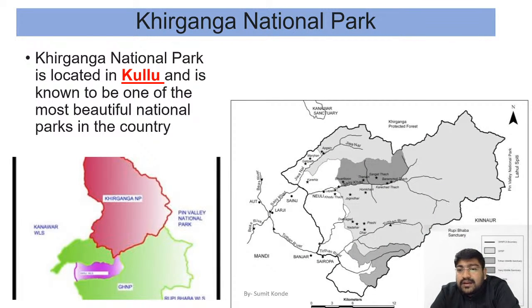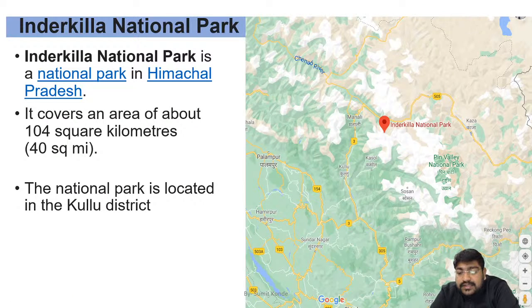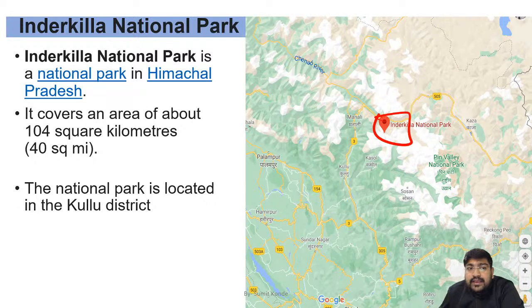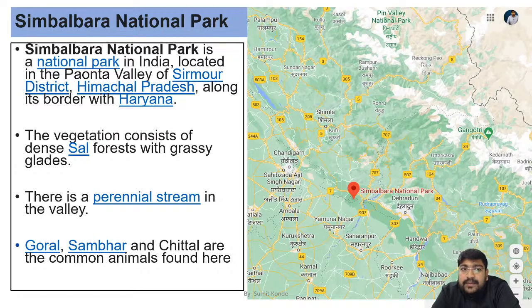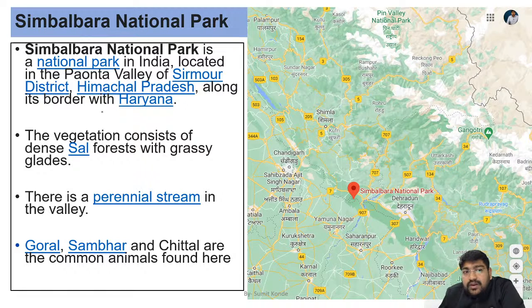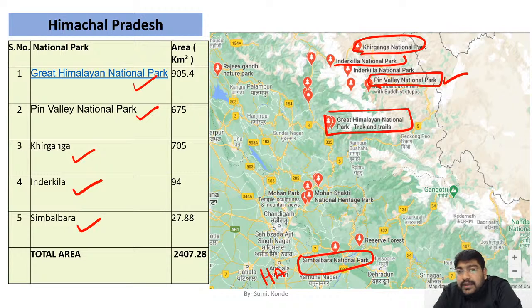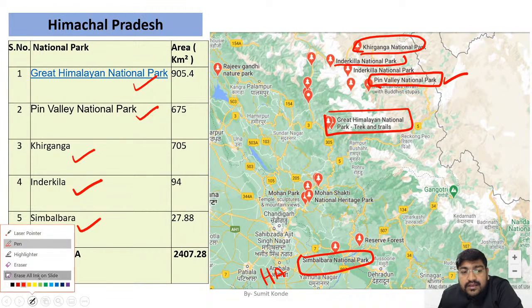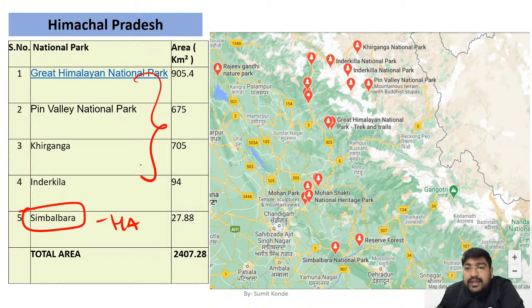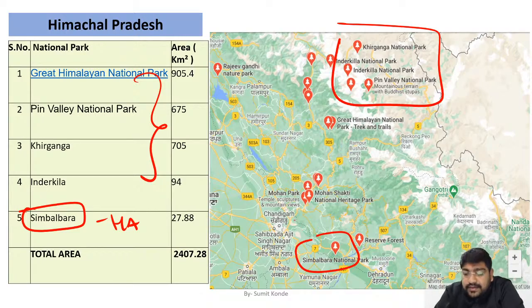Kheer Ganga is not that important — just glance at it; it becomes important if it comes in the news. It is in the Kullu region. Inder Kela is to the north of Pin Valley. Simbalbara is to the south, near the Haryana border — in Sirmour district. So all four national parks are in the northern Himalayan region of Himachal Pradesh, with only Simbalbara being the exception near Haryana.